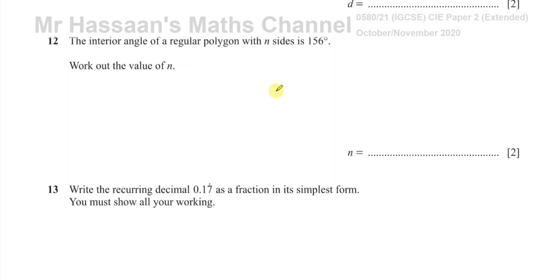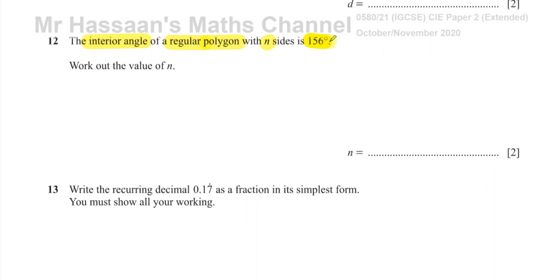I'm going to go through it in a bit of detail to make sure it's understood. It's telling us about this polygon. A polygon is a two-dimensional shape enclosed by straight lines. A regular polygon is one where all of the angles are the same size and all of the lengths are the same. They're asking about the size of one interior angle of a regular polygon with n sides, and it tells us that the angle is 156 degrees and we have to find how many sides it has.